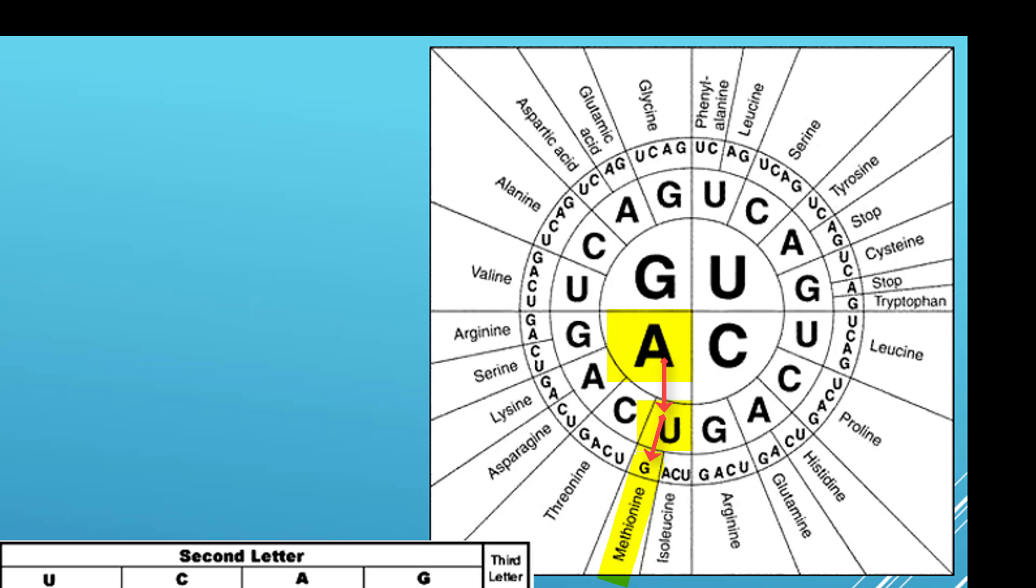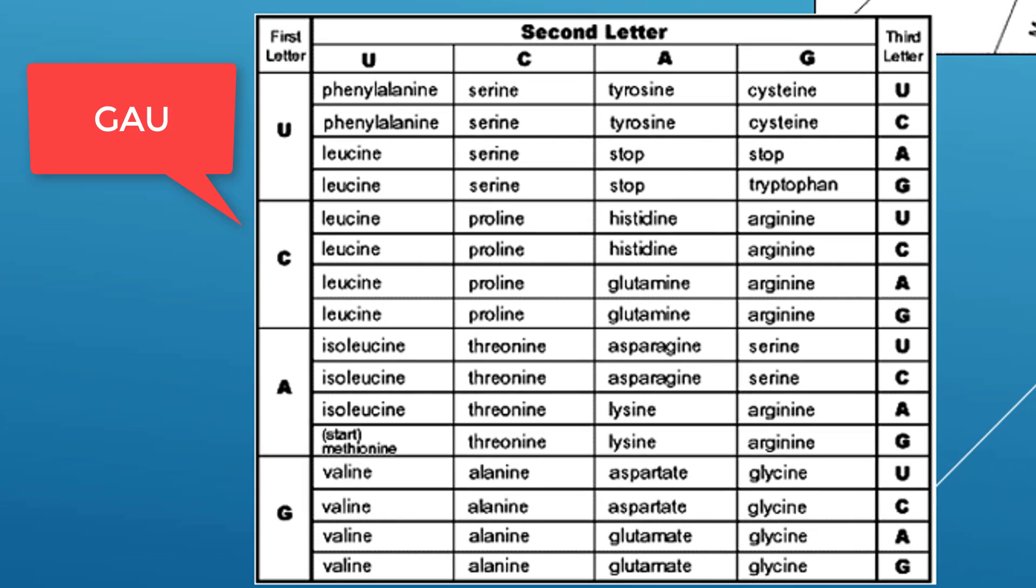I'm going to give you another example. Let's say you have the codon G-A-U. On the square chart, your first letter is G, that's the bottom row here. Your second letter is A, that's your third column, so find where those two line up. Then your third letter is U—find that U, and where all three of those line up, you have aspartate.